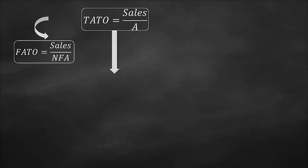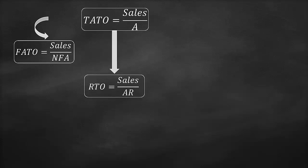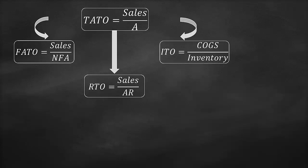Then we have the receivables turnover ratio, which is the sales divided by the accounts receivable. And we have the inventory turnover ratio, which is the cost of goods sold divided by inventory.